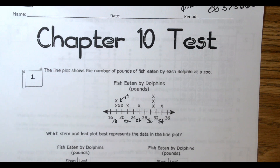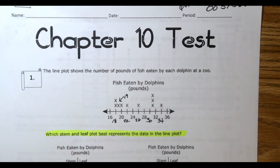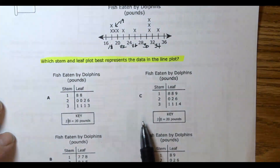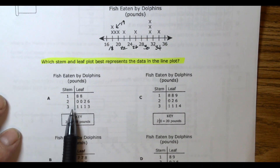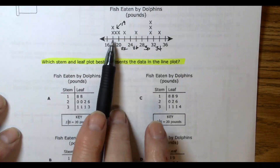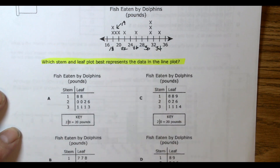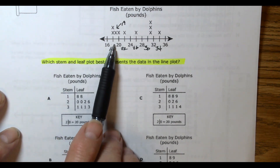The question is: which stem and leaf plot best represents the data in the line plot? What we have to do is go to each stem and leaf and make sure all these different data points are represented. We take each one of these points from the line plot and make sure it's represented by the stem and leaf plot. The very first one, we have 2 at 18.